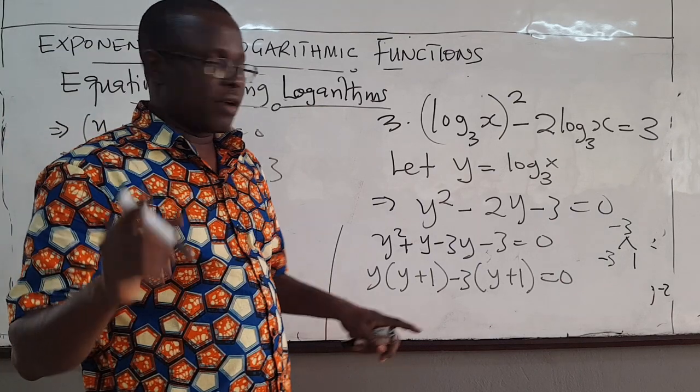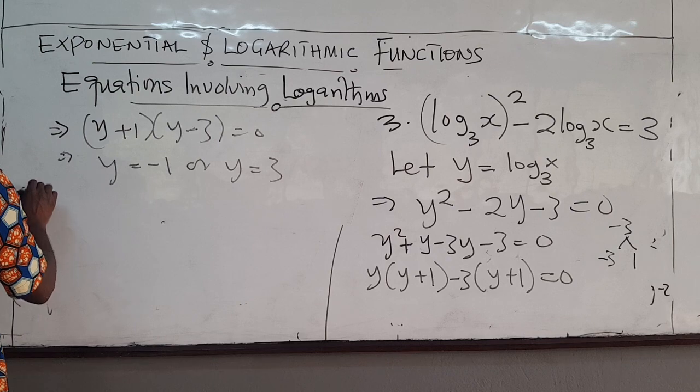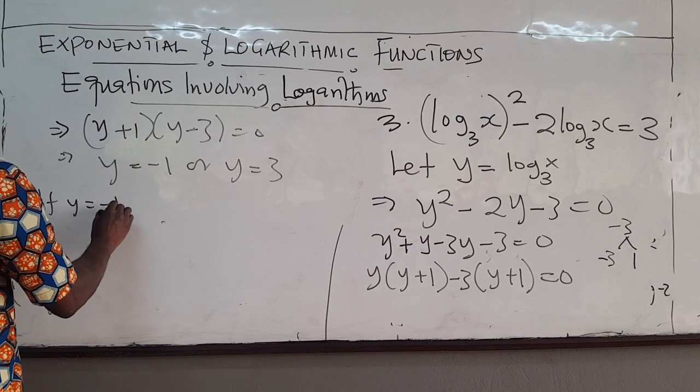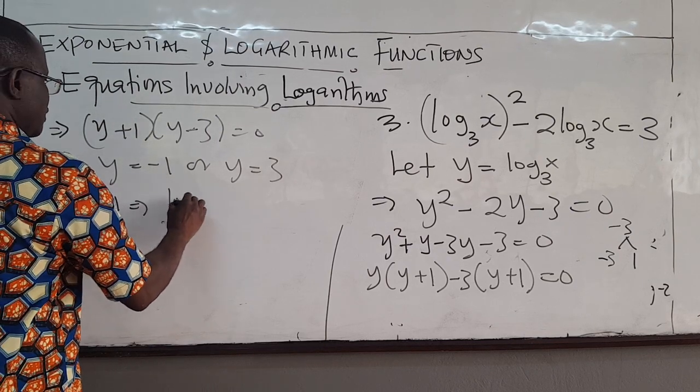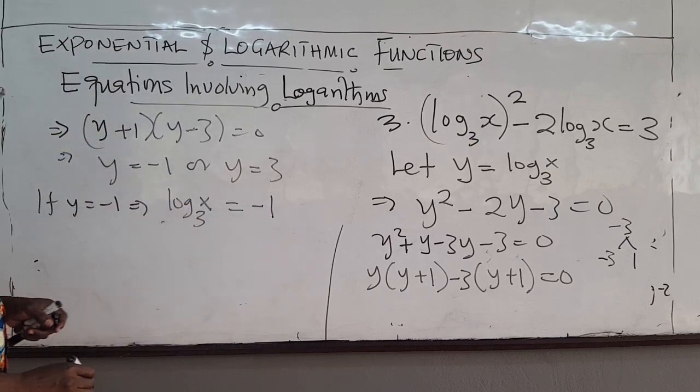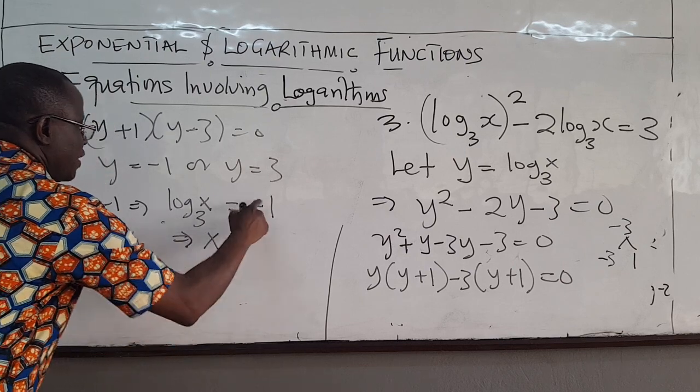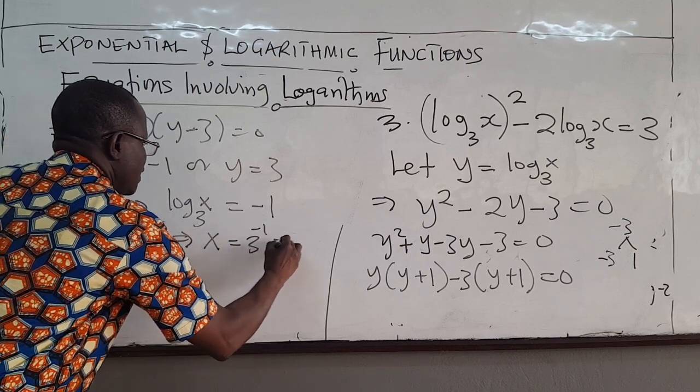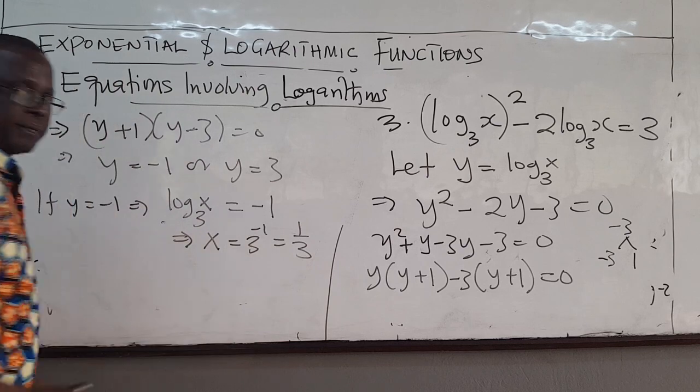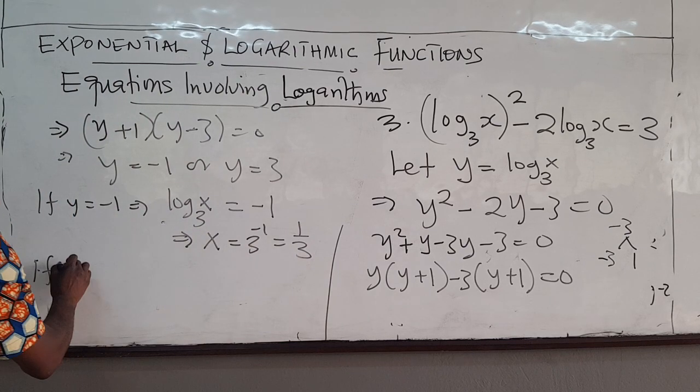Now remember, we are not solving for y, we need x. So if y is negative 1, that implies that log base 3 of x is negative 1, which implies that x is equal to 3 raised to the negative 1, which is 1 over 3.